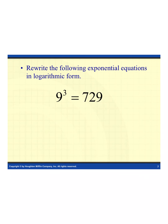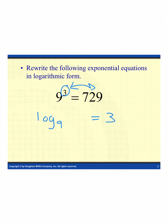Now we're going to rewrite exponential expressions as logs — going backwards. We note our base is 9, our exponent is 3, and remember a log always equals an exponent. So my log is going to equal 3. Swapping the exponent and the value, I get log base 9 of 729 equals 3. The base was 9 and stays 9; the exponent was 3 so the log equals 3; and 729 and 3 switch places to give the final log expression.